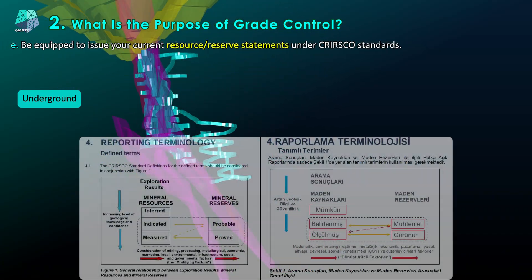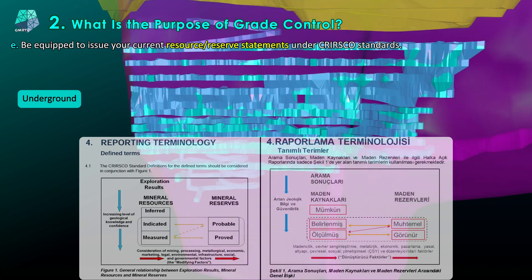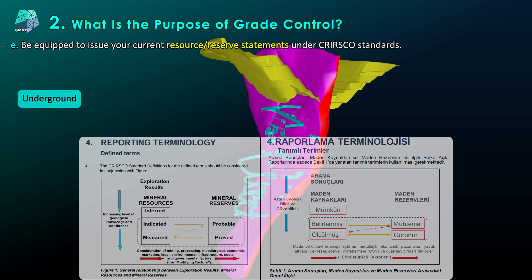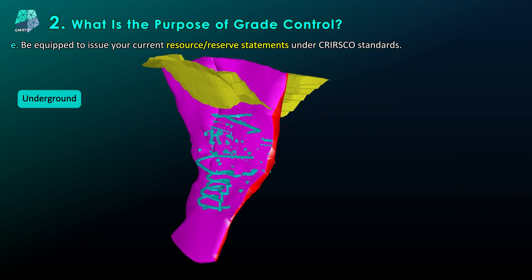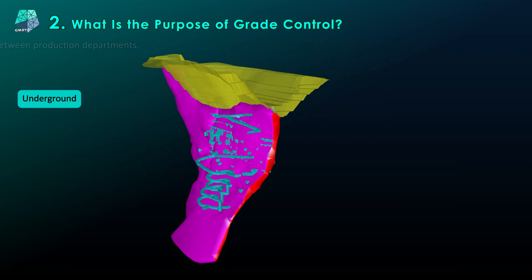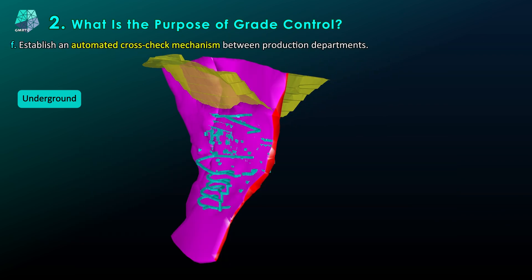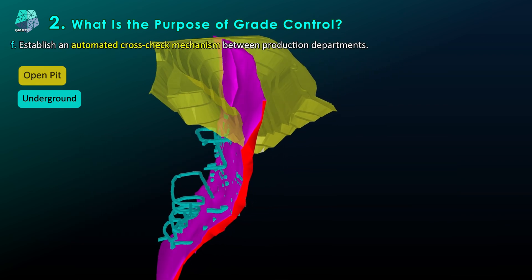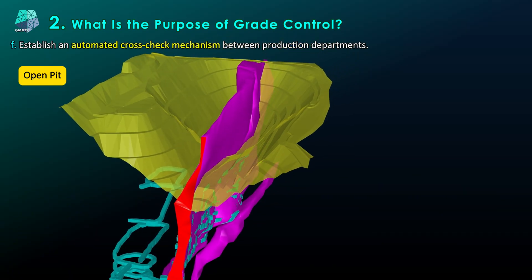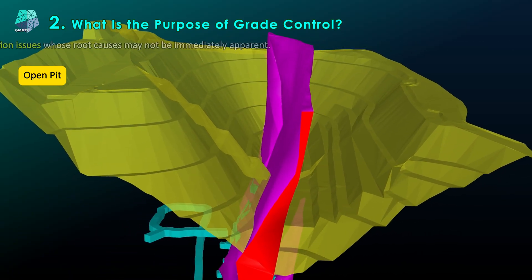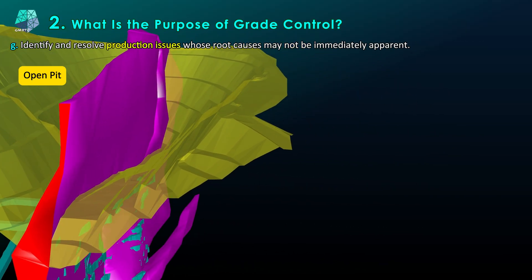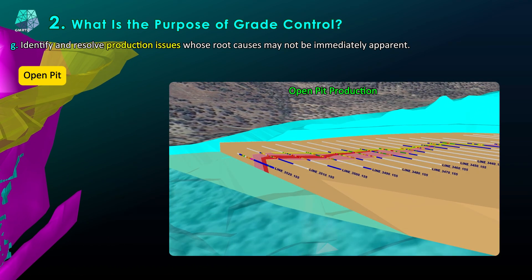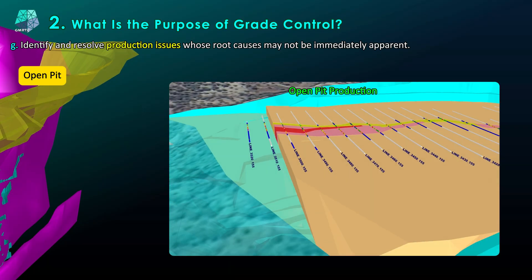You will be equipped to issue your current resource reserve statements under CRIRSCO standards, establish an automated cross-check mechanism between production departments, and identify and resolve production issues whose root causes may not be immediately apparent.